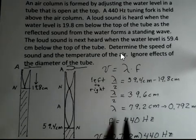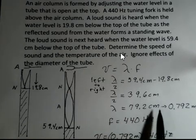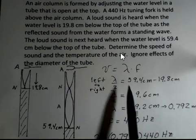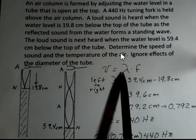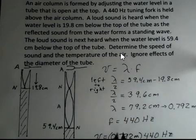The full wavelength is 79.2 centimeters, 0.792 meters. And we're halfway to getting our calculation going here. The other half is easy. We're given that the frequency of the tuning fork is 440 hertz.